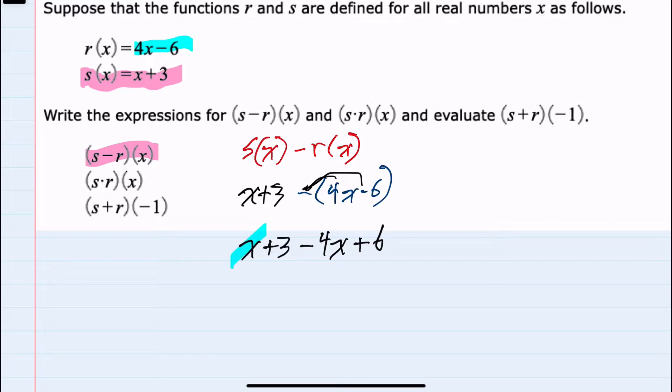From here combining like terms I have a plus 1x and a minus 4x for a minus 3x, and then a plus 3 and a plus 6 would be a plus 9. So this would be our s minus r of x.